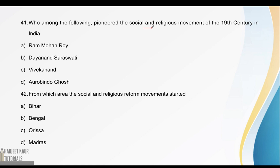In the 19th century, when these social and religious movements started, Raja Ram Mohan Roy started them. These movements were against idol worship, the caste system, the Sati Pratha practice, and child marriage — these social evils that existed at that time. Raja Ram Mohan Roy began this movement against these evils.